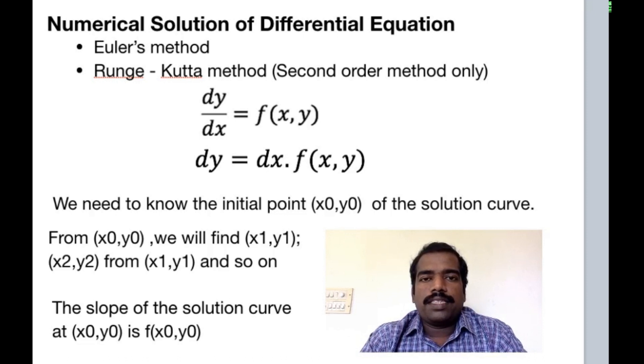From the initial point (x0,y0) we are able to find the slope of the solution curve at that point also, which is nothing but f(x0,y0). So we know the initial point (x0,y0) of the solution curve and also we know the slope of the solution curve at (x0,y0). With this information we can solve this differential equation either using Euler's method or Runge-Kutta method.